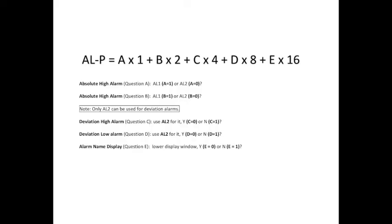To calculate the right value for ALP, please think about these five questions. Question A: Do you want AL1 or AL2 to be turned on when process high alarm is triggered? Question B: Do you want AL1 or AL2 to be turned on when deviation high alarm is triggered?